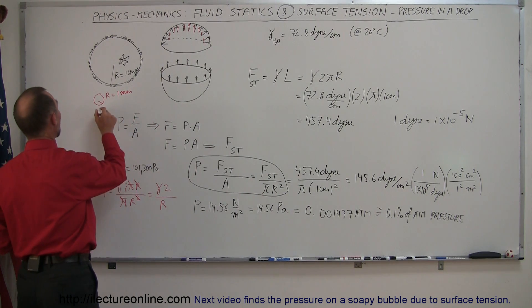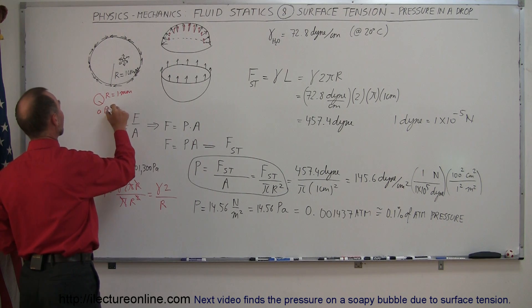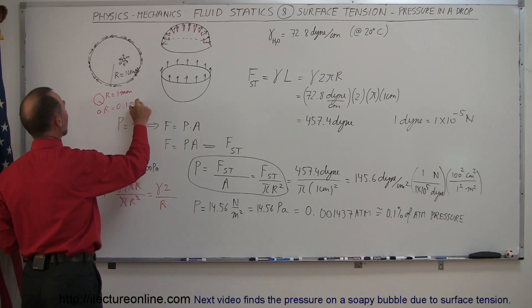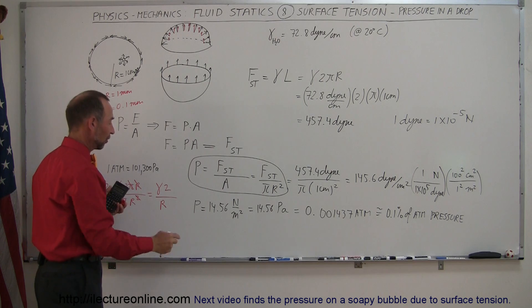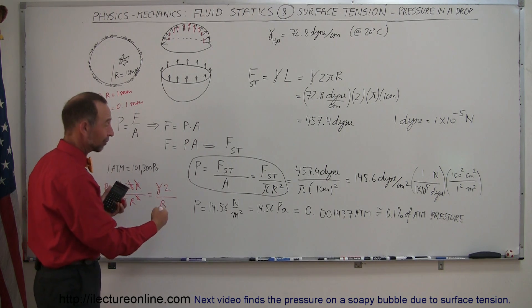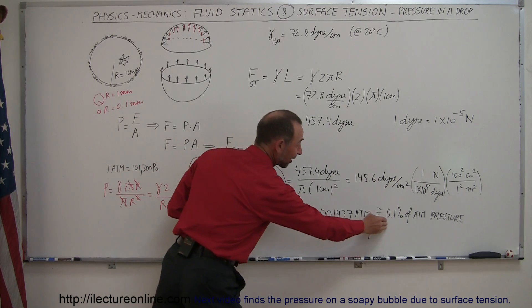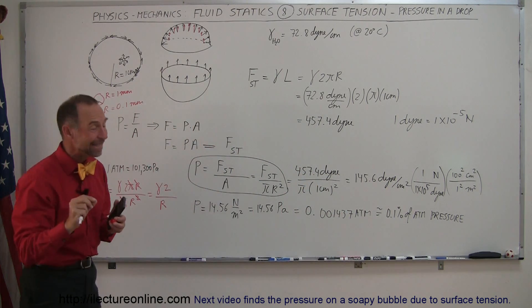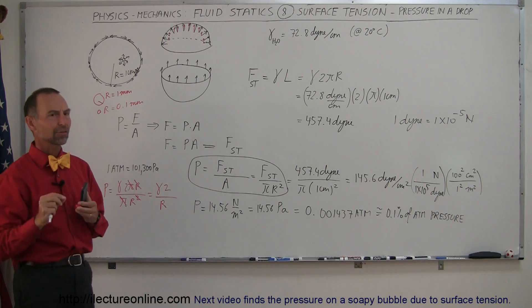If I now make even a smaller drop where the radius is equal to 0.1 millimeter, then of course it would be 100 times as much pressure, 1/100 the radius, 100 times as much pressure. So now the pressure inside that little drop would be 10 percent the pressure of atmosphere.